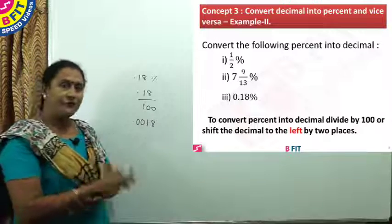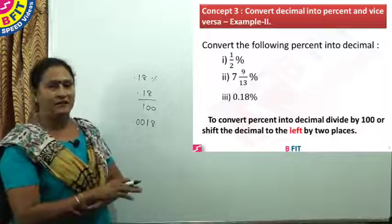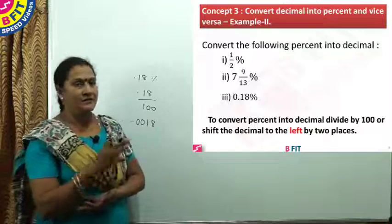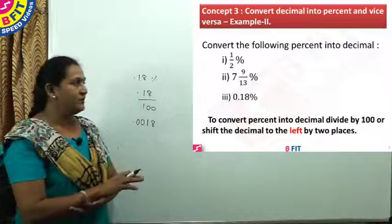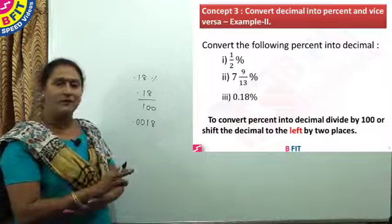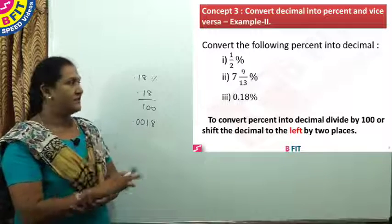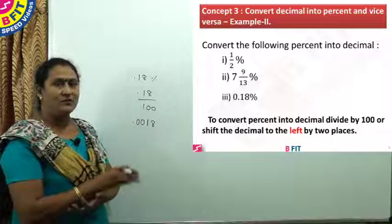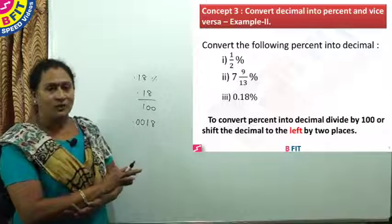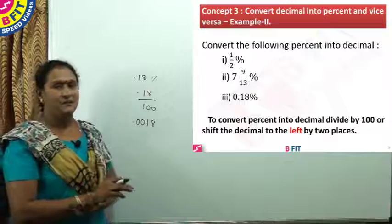We saw how to convert fraction to percent and percent to fraction, and decimal to percent and percentage to decimal. To convert any value to percentage, multiply the given number with 100. And to find the value when percentage is given, divide it by 100. So easily you can arrive at the answer. We will see the next concept.